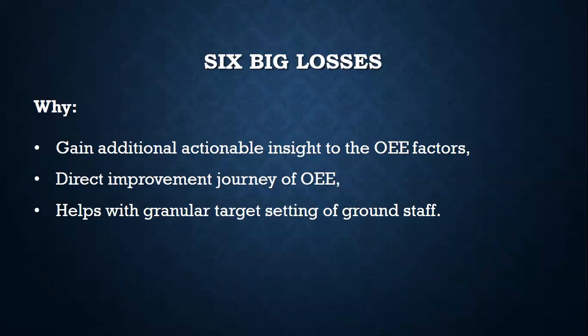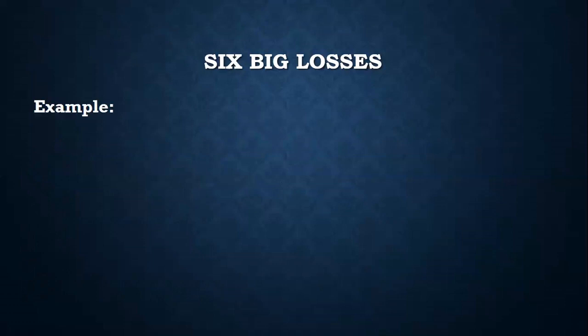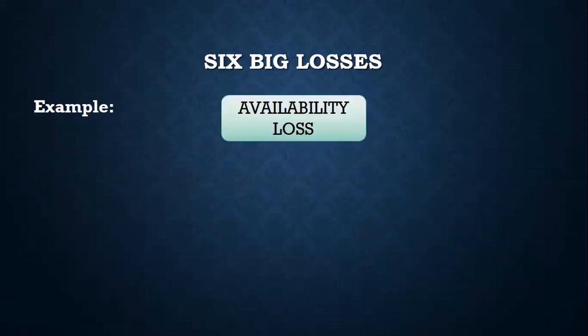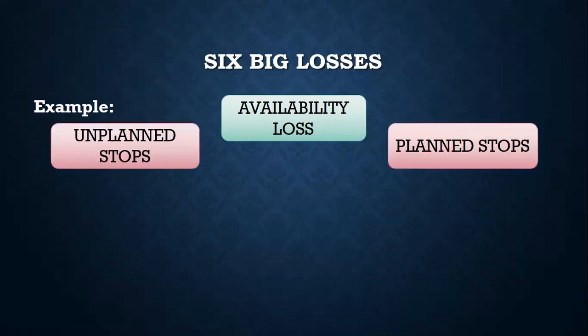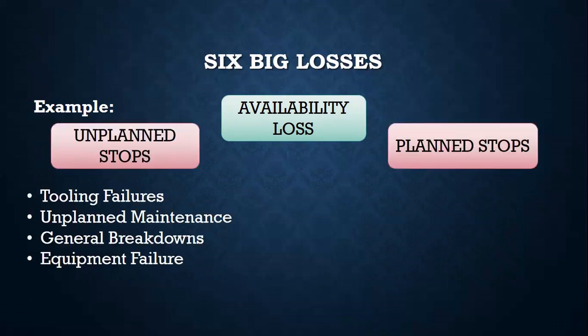Starting with availability examples — we shared earlier there are two losses in this header: unplanned stops and planned stops. Unplanned stops covers tooling failure, any needed sudden maintenance, general breakdown during running, and equipment failure without notice.